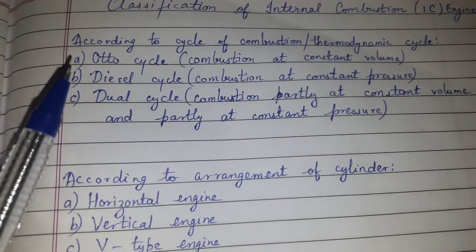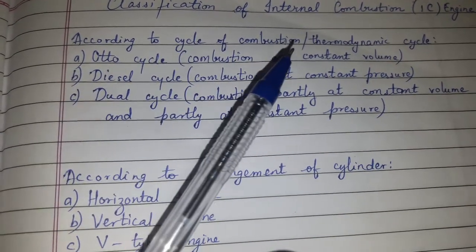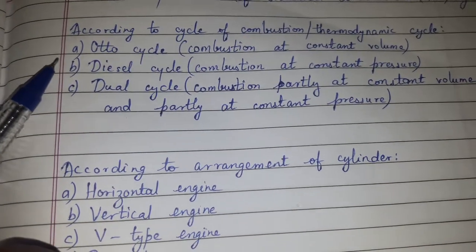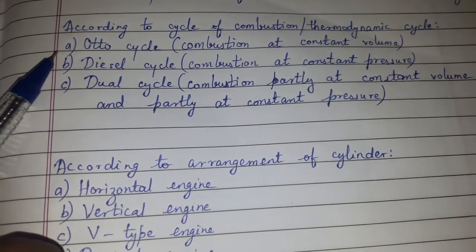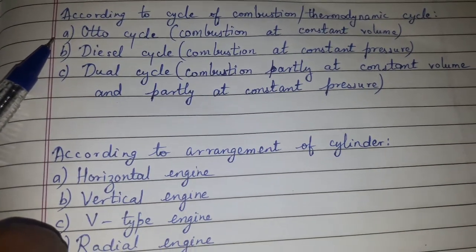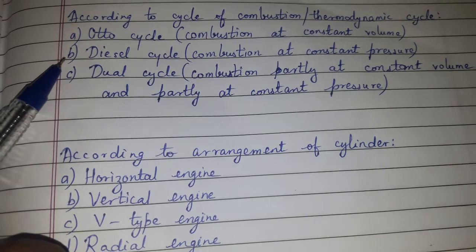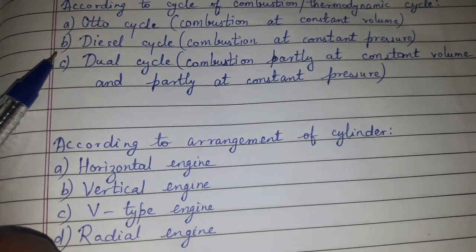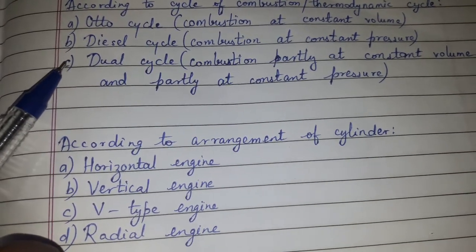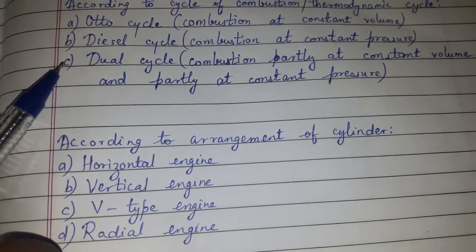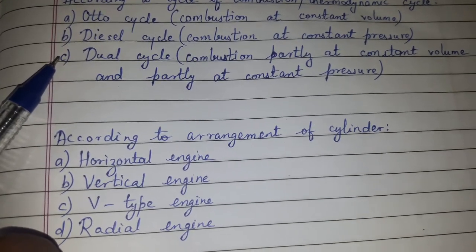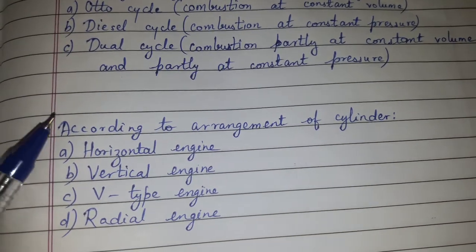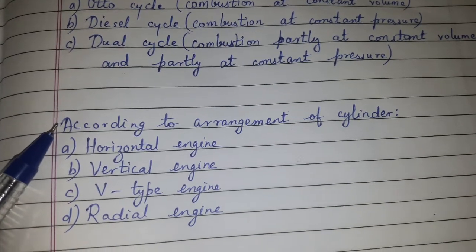According to the cycle of combustion or thermodynamic cycle: Otto cycle, that is combustion at constant volume; diesel cycle, that is combustion at constant pressure; dual cycle, which is combustion partly at constant volume and partly at constant pressure.